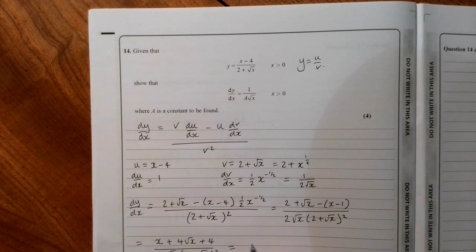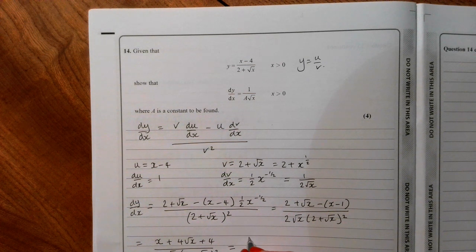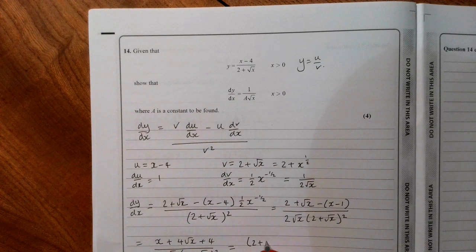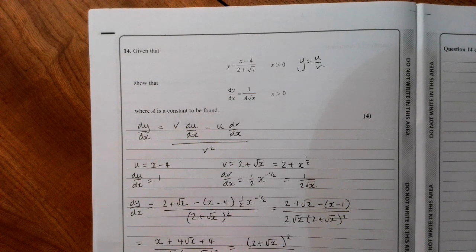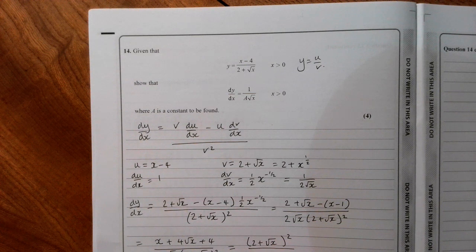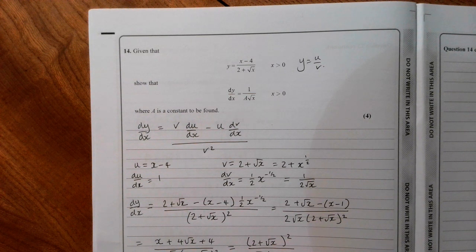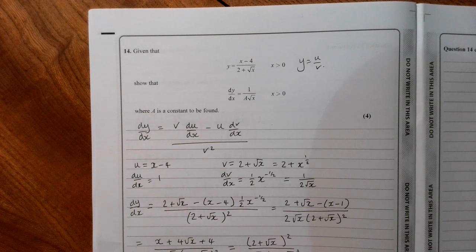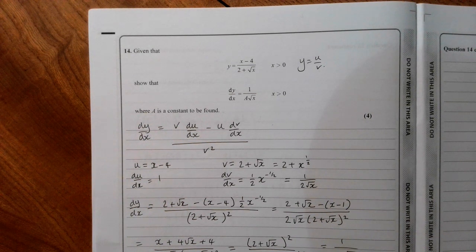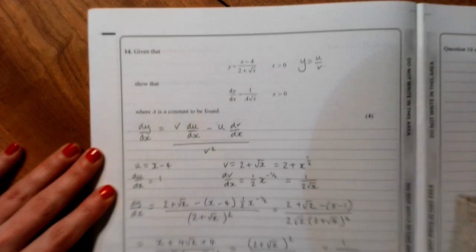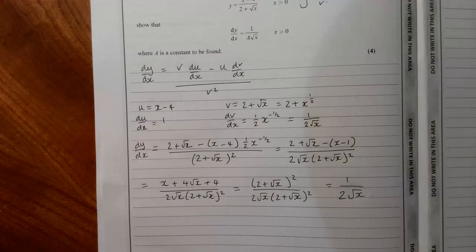And then that numerator is actually 2 plus root x all squared. We've got that nice hint there that we're going to want to cancel that. So the answer is 1 over 2, 3 times. So there we go.